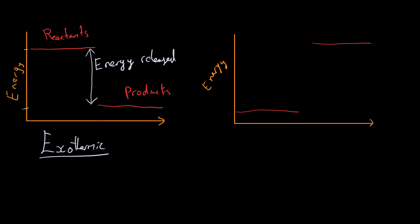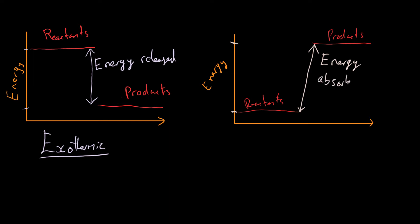We label them reactants and products. You can see that our amount of energy at the start is clearly less than the amount of energy we finish with in the products, and that means we are taking in energy rather than giving it out. Energy is being absorbed, and when energy is taken in from the surroundings to form the products, this is known as an endothermic reaction.